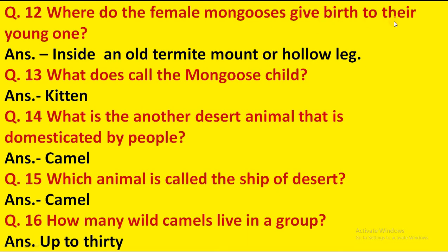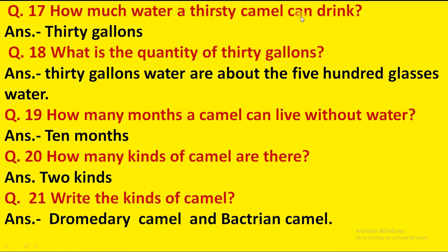Where do female mongooses give birth to their young ones? Inside an old termite mound or hollow log. What is a mongoose's child called? Keeter. What is another desert animal domesticated by people? Camel. Which animal is called the ship of the desert? Camel. How many wild camels live in a group? Up to 30. How much water can a thirsty camel drink? 30 gallons — about 500 glasses of water. How many months can a camel live without water? 10 months. How many kinds of camels are there? Two kinds: dromedary camel and Bactrian camel.